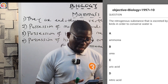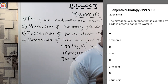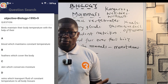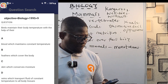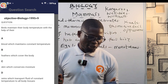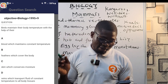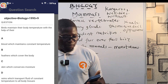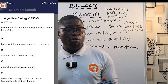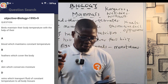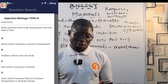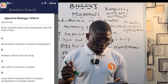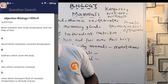Another question asks: birds maintain their body temperature with the help of which of the following? Options: A — blood which maintains constant temperature, B — feathers which cover the body, C — skin which conserves moisture, D — veins which transport fluid. The correct answer is B — feathers which cover the body, which they use to regulate their body temperature.